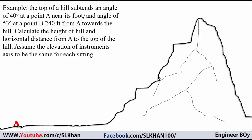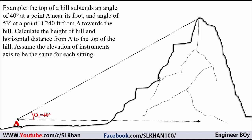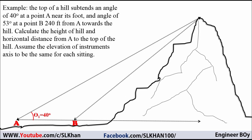Suppose this is a mountain whose height is to be determined. The top of the hill subtends an angle of 40 degrees at point A. So we have point A making a 40-degree angle with the top of the mountain. This data is taken by setting an angular measuring instrument — a theodolite or dumpy level — at point A and sighting the top of the mountain. The vertical angle is 40 degrees. There is another point B, 240 feet from A toward the hill.